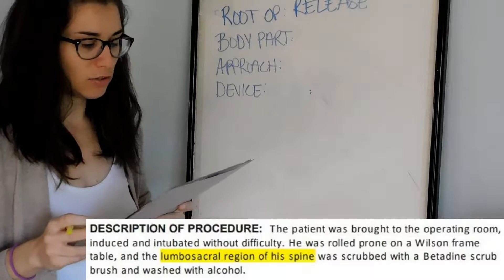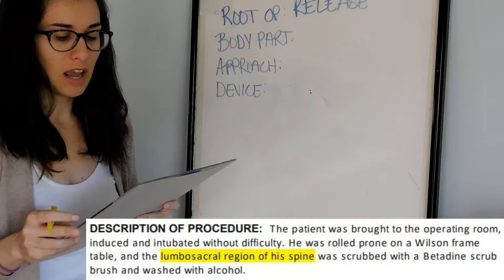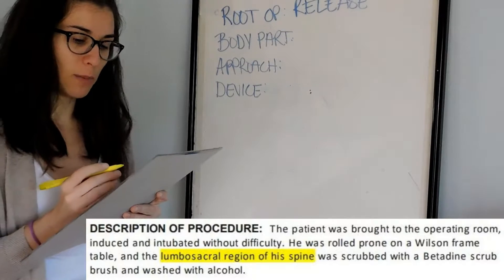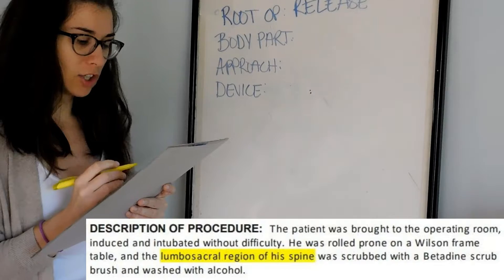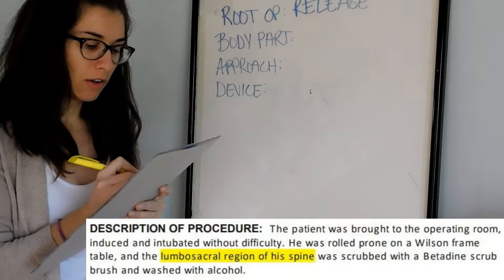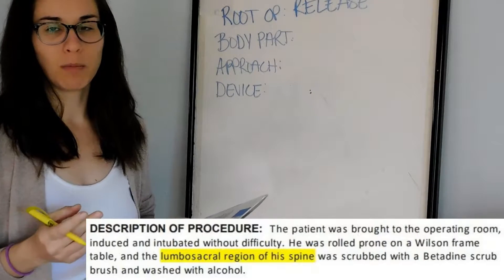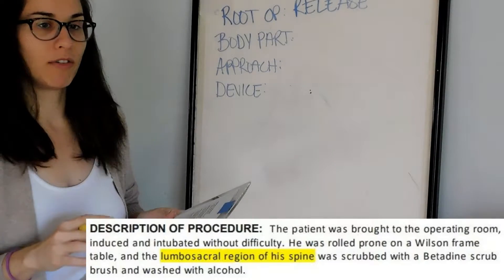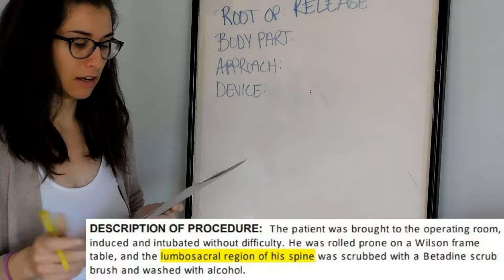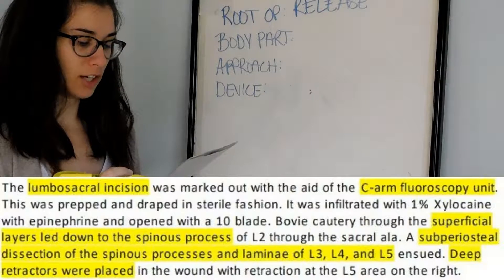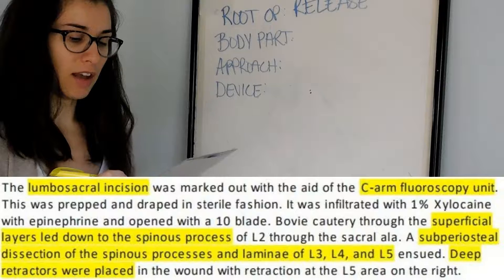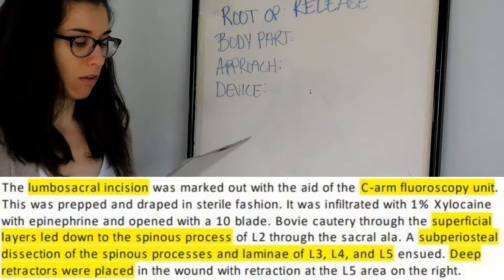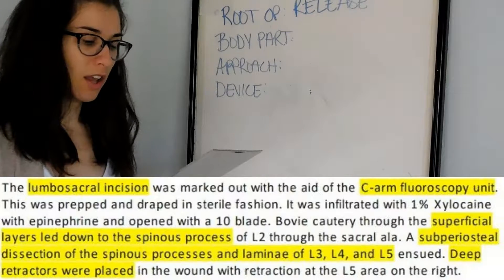The procedure description says the patient was brought to the operating room, induced and intubated without difficulty. He was rolled prone on a Wilson frame table and the lumbosacral region of his spine was scrubbed with Betadine scrub and washed with alcohol. We already know the procedure takes place in the lumbar region — they're reinforcing lumbosacral. The lumbosacral incision was marked out with the aid of a C-arm fluoroscopy unit.